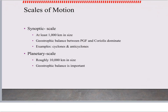The synoptic scale is at least a thousand kilometers in size. Geostrophic balance between the pressure gradient force and the Coriolis force is most important at this level. Examples are cyclonic and anticyclonic forms — your high-pressure and low-pressure systems. The planetary scale is roughly about 10,000 kilometers in size. Geostrophic balance is very important at this level. For planetary scale, we focus on global wind patterns such as our westerlies, trade winds, and polar easterlies.